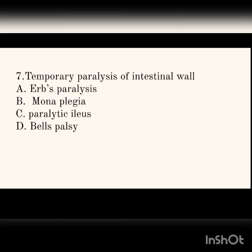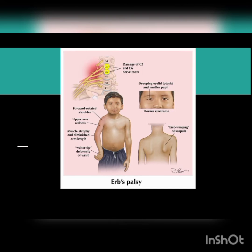Next question: temporary paralysis of the intestinal wall. The options are Erb's palsy, monoplegia, paralytic ileus, and Bell's palsy. The answer is paralytic ileus — paralysis of the intestinal wall. Erb's palsy is a brachial plexus palsy where the person's hand is in the waiter's tip position.